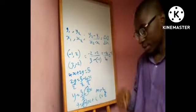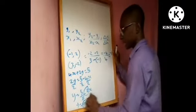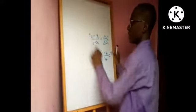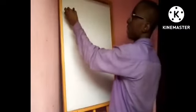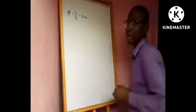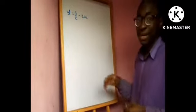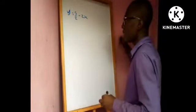Now let's talk about how to sketch the graph of a straight line. Taking the same equation y = 5/2 − 2x, if we don't want to use the arithmetic method and prefer the graphical method, we will sketch that graph and use our sketching to calculate the gradient.